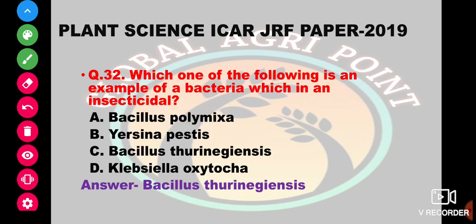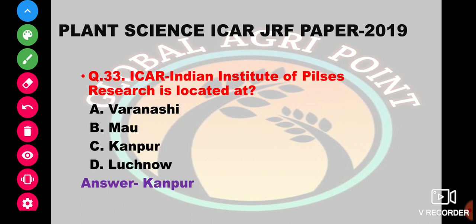Which bacterium is an insecticidal pest agent? The options are Bacillus polymyxa, Arsenia pestris, Bacillus thuringiensis, and Lepcylla oxytorcha. The answer is Bacillus thuringiensis. IIPR (Indian Institute of Pulses Research) is located at Varanasi, Mao, Kanpur, or Lucknow. The answer is Kanpur.